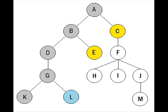Finding L unvisited, we go to node L. Since it has no more children, we backtrack again to node G. Since all of G's children are visited, we backtrack to node D. D's only child is already visited, so we backtrack to B. B has one child node left unvisited, so we go to node E. Node E has no child nodes, so we backtrack to B again. All of B's children are visited, so we backtrack to node A.